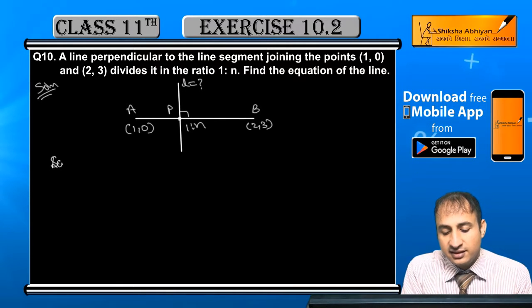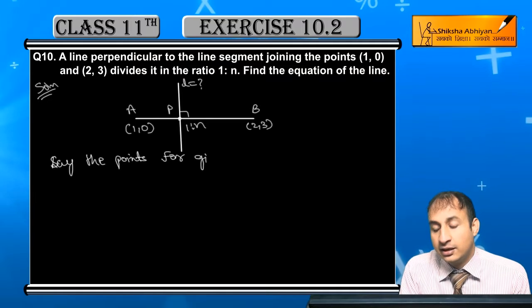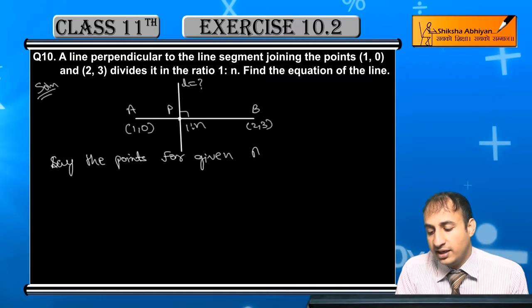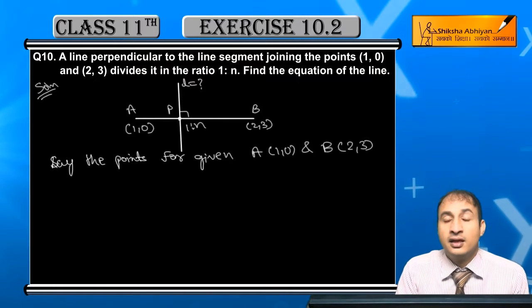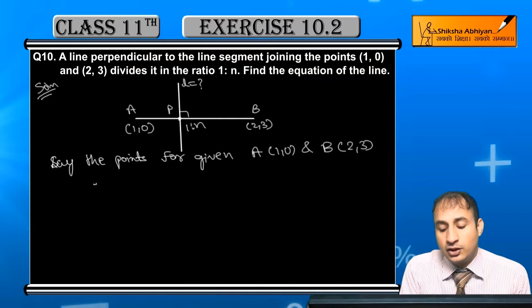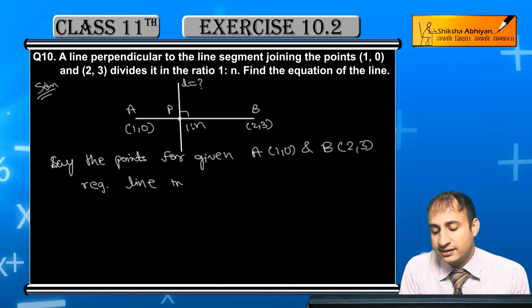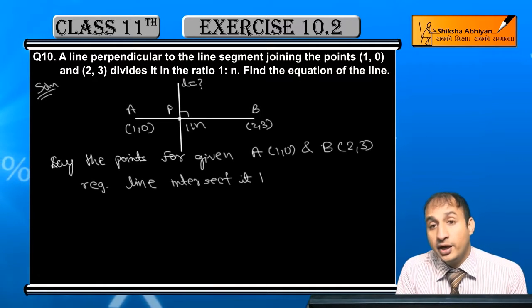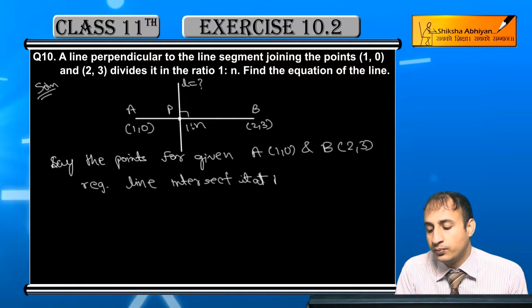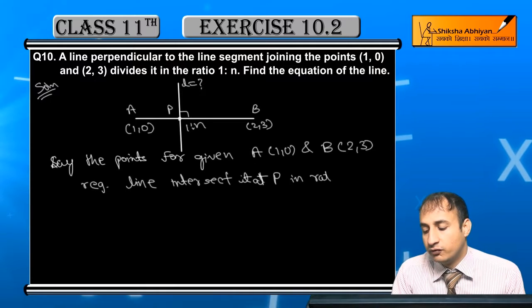Let us say the points for the given line are A(1,0) and B(2,3). The required line intersects it at point P in ratio 1 is to n.